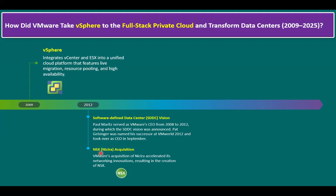Within NSX, all network components become virtualized. Just as in vSphere physical server components become virtual — CPU becomes virtual CPU, memory becomes virtual memory, disk becomes virtual disk, and network card becomes virtual NIC — similarly in NSX, physical network components are virtualized. Physical switches become logical switches, firewalls become distributed firewalls, and we have load balancing devices and virtual routers, also called distributed logical routers. The key components — switching, routing, load balancing, and firewall — all become virtualized.